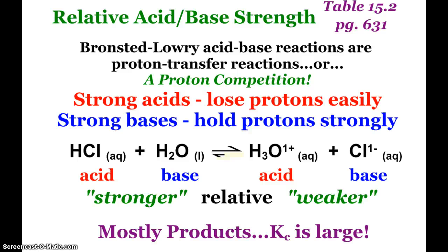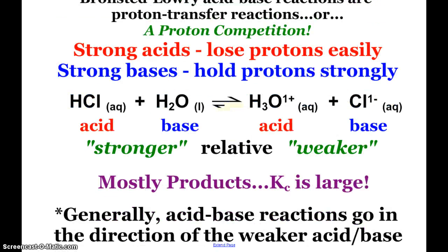Hydronium ion is still considered a stronger acid in the grand scheme of the rankings. But again, relatively to each other, this is how they add up. And so again, here we see the formation of mostly products. Our Kc is large. And in general, our acid-base reactions will go in the direction of the weaker acid or base.